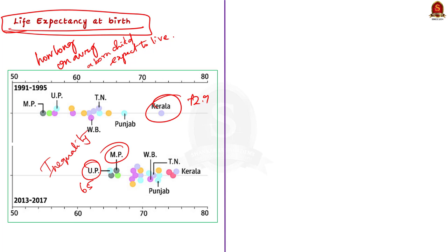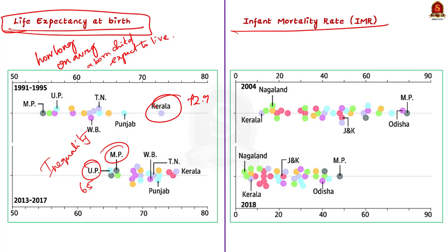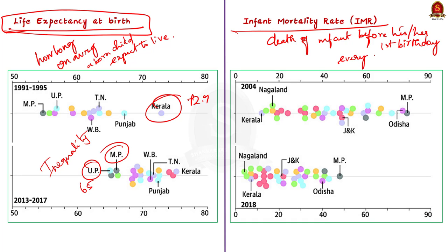Now look at the second graph, which is with respect to IMR in India. IMR is infant mortality rate — the death of an infant before their first birthday. The infant mortality rate is the number of infant deaths for every 1,000 live births. In 2004, Kerala had the lowest IMR of 12, and in 2018 Nagaland had the lowest IMR of 4. In 2004, Madhya Pradesh had the highest IMR of 79, and again in 2018 Madhya Pradesh had the highest IMR of 48.